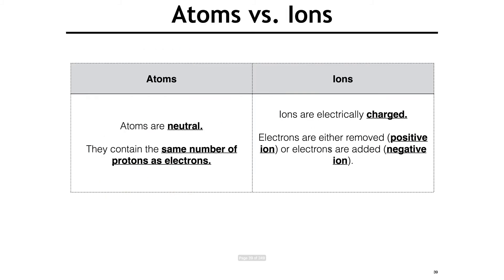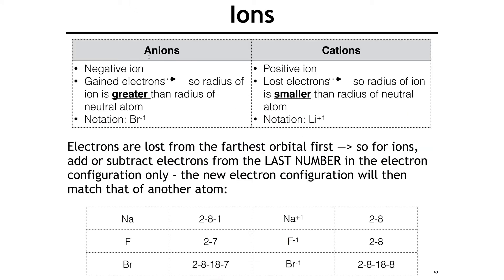Atoms versus ions: atoms are neutral — they have the same number of protons as electrons. Ions are electrically charged. If you take electrons away, you remove a negative, leaving a positive charge — a cation. If you add electrons, you add a negative, creating a negative ion — an anion. Anions gained electrons, so they get bigger. Cations lost electrons, so they get smaller. Electrons are always lost from the farthest orbital.